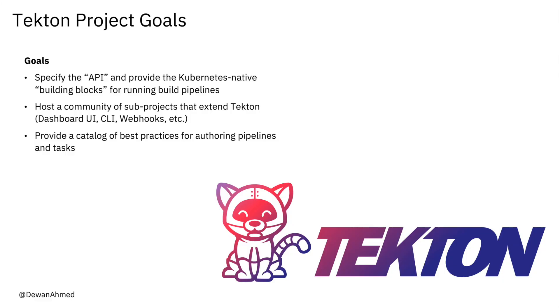Now what is Tekton? The goal of the Tekton project is to specify the API and provide Kubernetes-native building blocks so that you can run your own build pipeline. The umbrella Tekton project also hosts a number of sub-projects for dashboard, CLI, webhooks, triggers, etc. The Tekton project also provides a catalog of best practices for authoring tasks and pipelines that can be reusable.